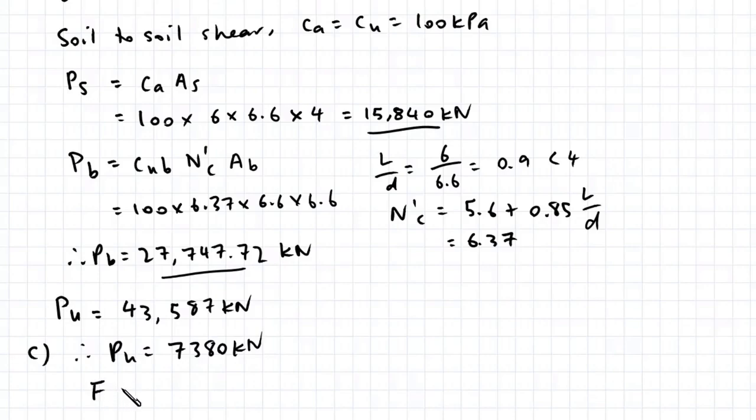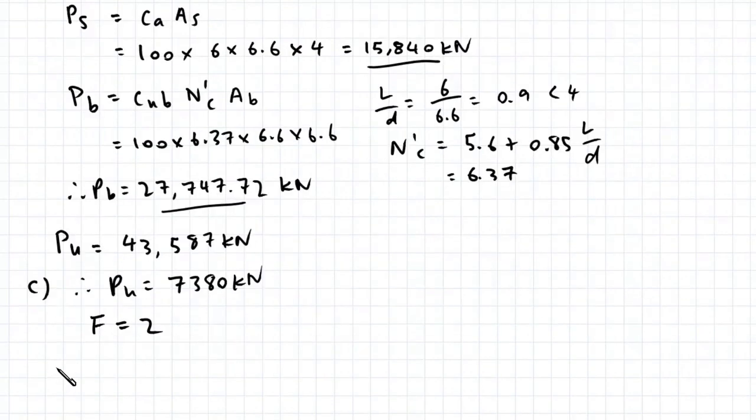If our factor of safety is 2, the maximum allowable force equals Pu divided by F. So 7,380 over 2 works out to be 3,690 kN.